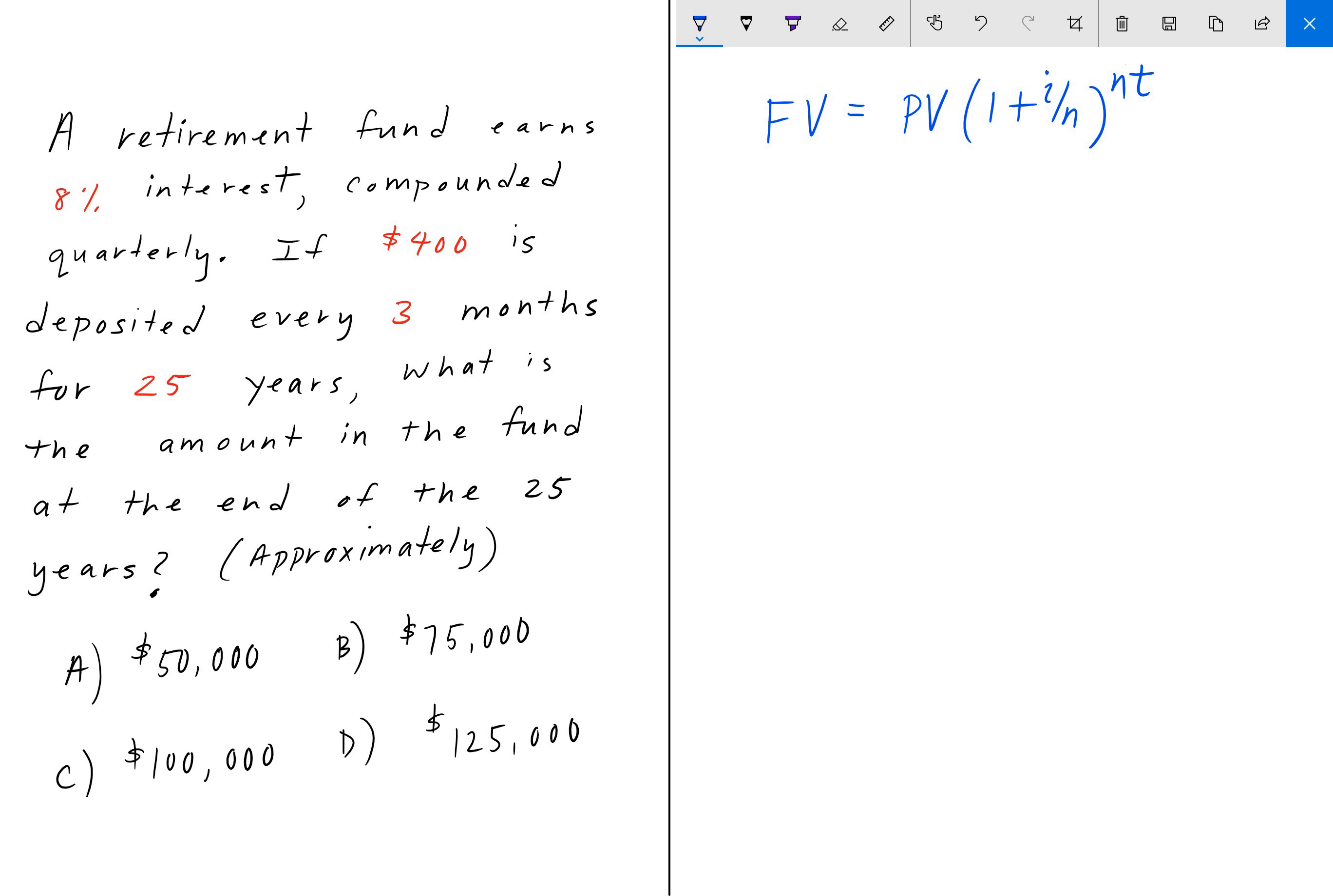And that is also equal to A[(1 + i/n)^(nt) - 1] / (i/n). This time, A is just the payment amount. If you are, like in this case, depositing $400 every three months for 25 years, A would be your $400 in this case.